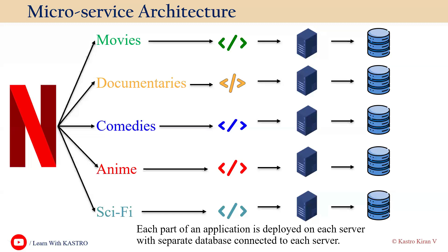Each service has a well-defined purpose, and communication between services is possible using APIs — Application Programming Interfaces. Microservice architecture also supports database choices, meaning services can have their own databases depending on their specific needs. Each service can be independently deployed, scaled, and updated without affecting other services in the application.